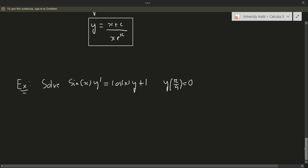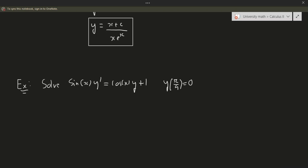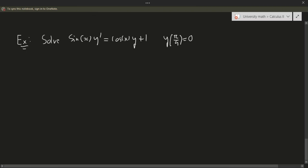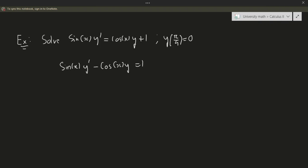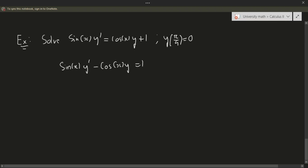For the last example, we have this ODE along with an initial condition. Anytime a differential equation has an initial condition, it is known as an initial value problem — it's just a differential equation with a given initial condition. We rearrange to get sine(x) y′ minus cosine(x) times y equals 1. This wasn't in standard form, so we divide everything by sine(x), giving y′ minus cotangent(x) times y equals cosecant(x).